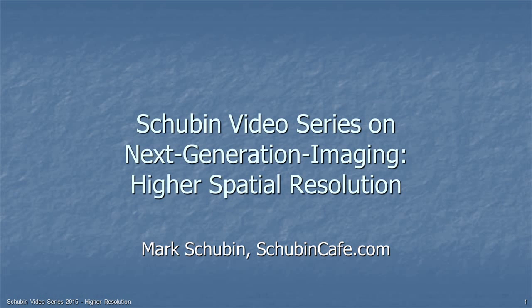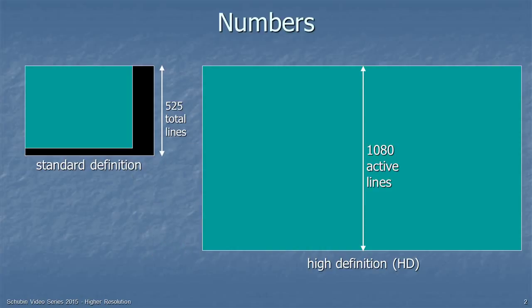Welcome to the Shubin Video Series on Next Generation Imaging. This one is going to be on higher spatial resolution — that's how many pixels you have across the picture, or from the top of the picture to the bottom of the picture. Now let's talk about numbers first of all.